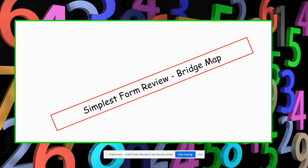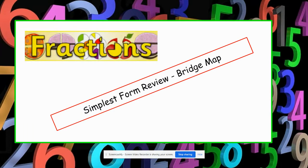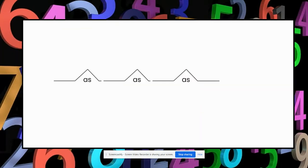Today we're going to be doing a review of simplest form from Chapter 8 in McGraw-Hill, and we're going to be using a bridge map. This is how we start our bridge maps.